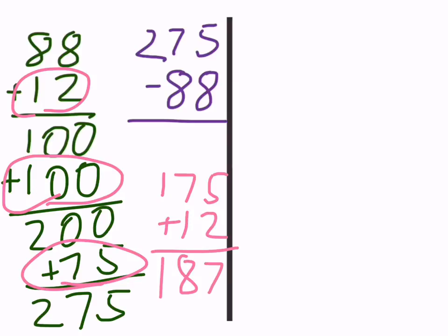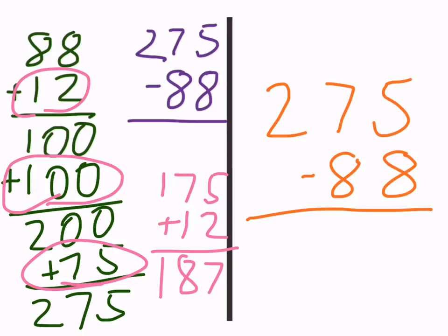And let's just try it now with the borrowing method or trade first method as well. So can I subtract 8 from 5? No. So I need to borrow a 10 from here and add it to make 15. So this becomes 6. I'm taking that 10 and putting it over here. Now 15 minus 8 is going to give me 7. Next, same idea.